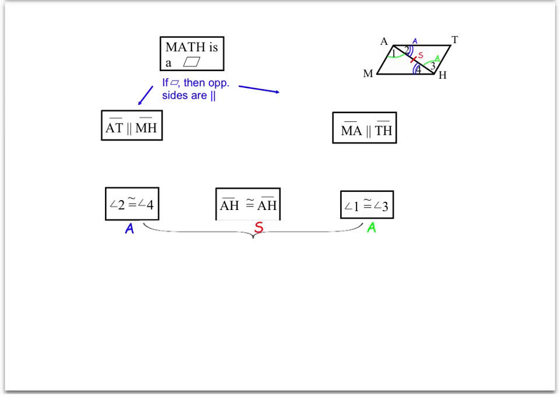An important thing to point out: I have two sets of parallel lines and two sets of angles, so make sure you're matching them up correctly. If AT and MH are parallel, that leads to angle 2 being congruent to angle 4 — because AT and MH are the parallel lines, and the transversal creates angle 2 and angle 4 between them. Angle 1 and angle 3 do not touch those parallel lines along the transversal. The other parallel pair, MA and TH, gives us angle 1 and angle 3 being congruent.